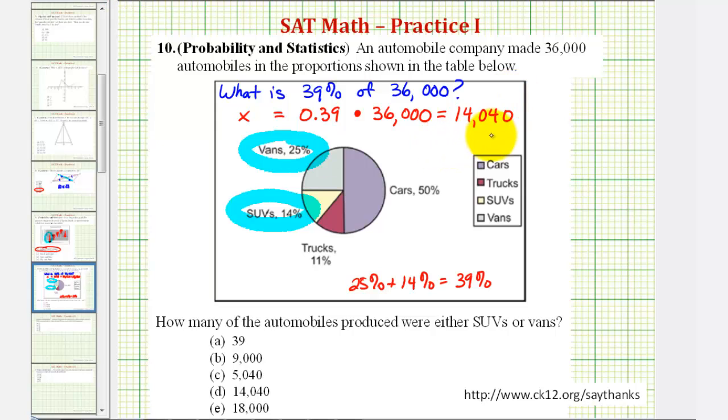And therefore, 14,040 automobiles are either SUVs or vans, and therefore our answer is D. I hope you found this helpful.